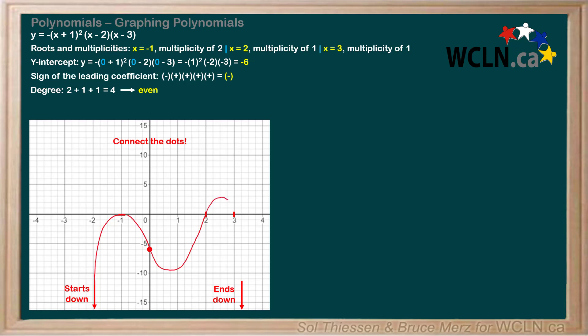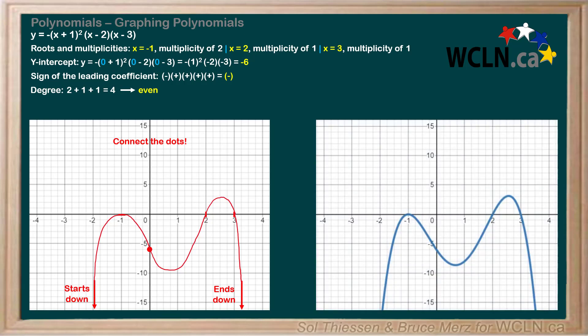Now we'll continue the upward motion through the x-axis since the graph crosses over at this root, and turn around to go back through the root at x equals 3. Finally, we'll continue the downward motion to the end behavior arrow on the right. That's it — we've sketched an approximation of this function from the characteristics we determined from its equation. Here is the actual plot of the function. As you can see, our approximation was very close. Even if it had been a little further off, that would be okay, as long as we had the x and y-intercepts and end behavior correct.